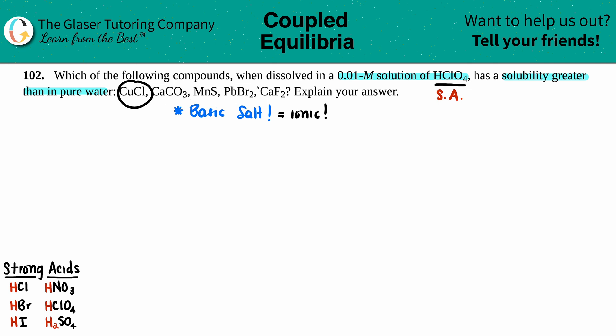This is from review. We have to look at the ions that these five compounds dissolve into. So we have CuCl, CaCO3, MnS, PbBr2, and then CaF2.